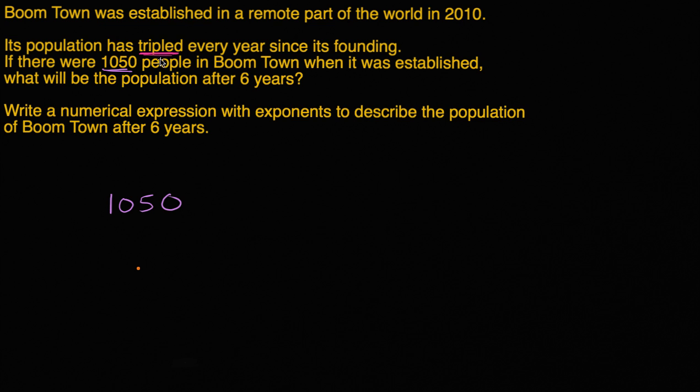So remember, after every year it triples. So after the first year, we're going to multiply by three. We're going to have three times the population. The second year, multiply by three. Third year, fourth year, fifth year, and sixth year. Or, maybe an easier way or a more compact way of writing this, is its population after six years is going to be its initial population times three to the sixth power. We have six threes that we're multiplying together. Times three to the sixth power.